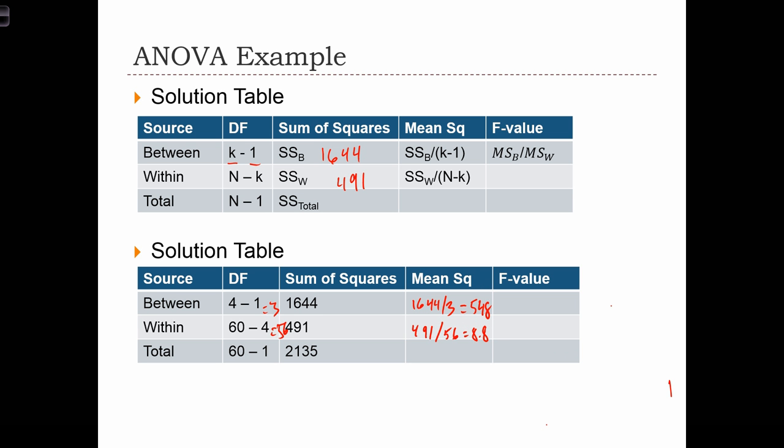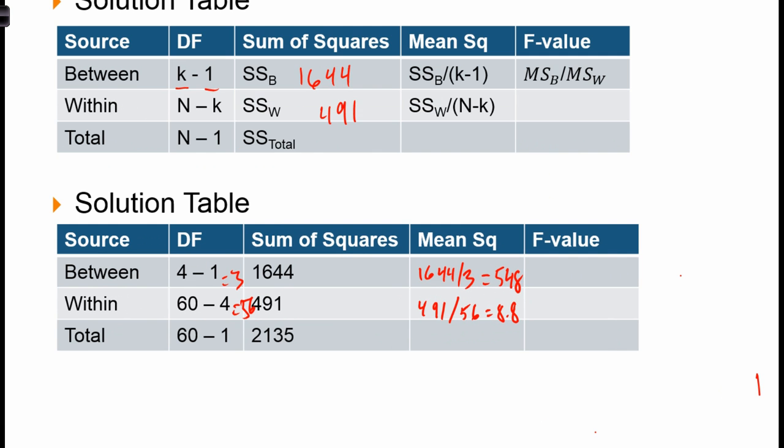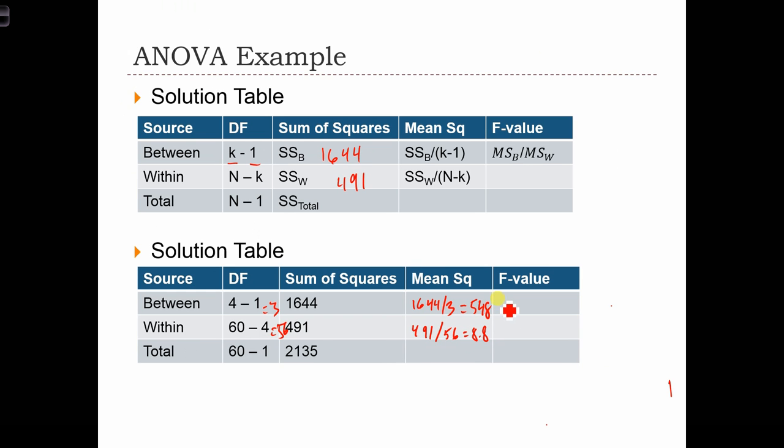And our F statistic is going to be the ratio of those two things. 548 divided by 8.8. And that equals 62.3. So our F test, the test statistic, equals 62.3.